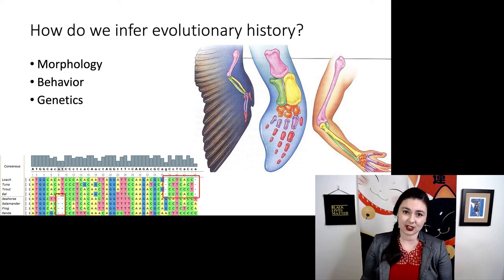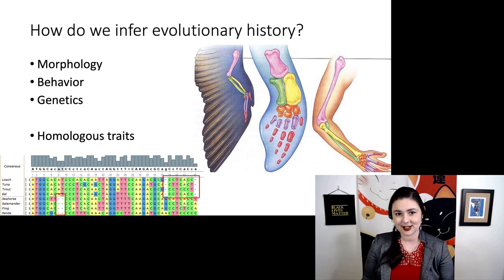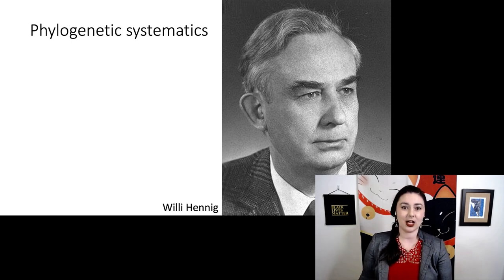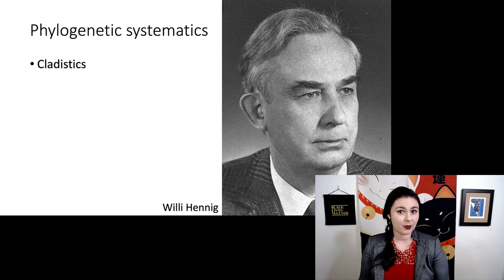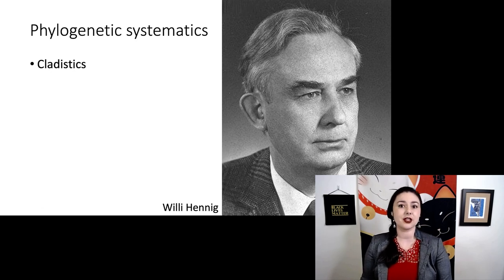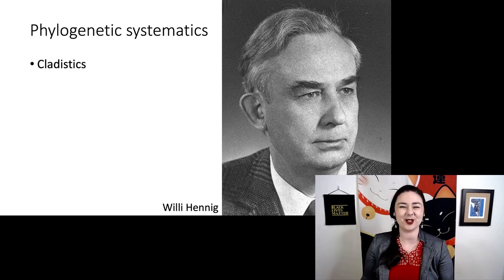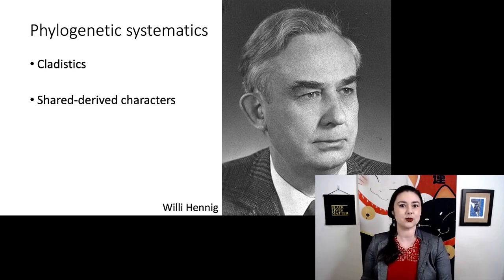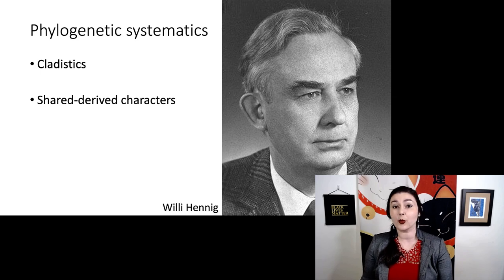The goal, no matter what type of data we're looking at, is to find homologous traits, and that gives us a clue as to who is more closely related to whom. We have a specific methodology called phylogenetic systematics — another name for it is cladistics — put together by Willy Hennig in the 1960s. It took at least a decade for his methods to spread through the scientific community, partly because he first wrote in German. The key to his methodology is the idea of shared derived characters.